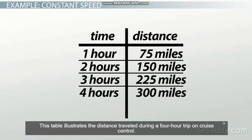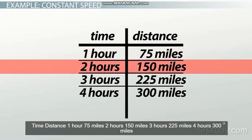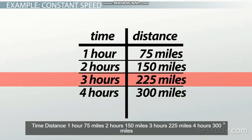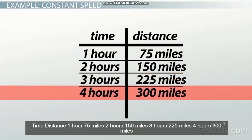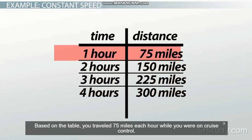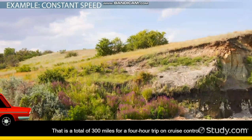This table illustrates the distance traveled during a four-hour trip on cruise control. At one hour, the distance is 75 miles. At two hours, the distance is 150 miles. At three hours, the distance is 225 miles. At four hours, the distance is 300 miles. Based on the table, you travel 75 miles each hour while on cruise control, for a total of 300 miles over a four-hour trip. This is an example of what constant speed data looks like.